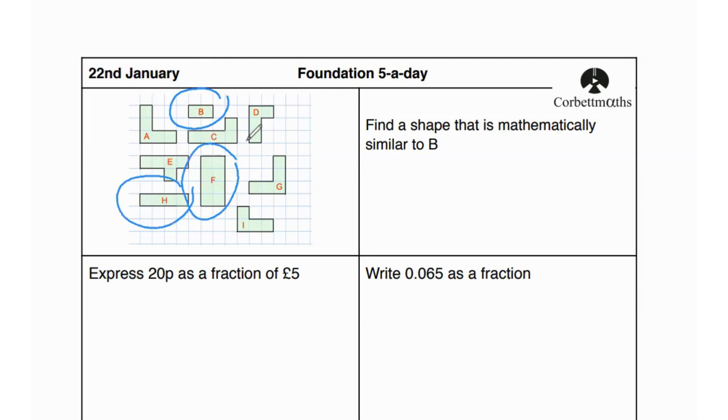The reason that shape F is the one that's mathematically similar is that if we look at shape B, shape B has two boxes horizontally and one vertically. So if we compare that shape H, shape H has four boxes horizontally, which means that a scale factor has been used. But the scale factor has only been used on the horizontal length, not on the vertical length, which takes H out of our options.